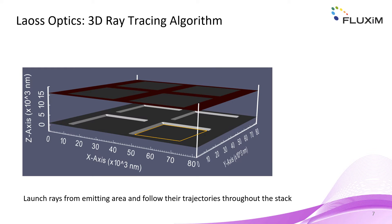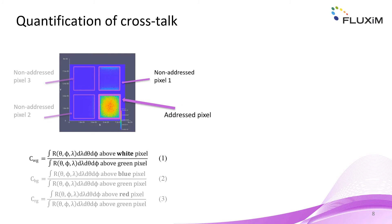With this we are ready to start our simulation. Rays are launched from the addressed green pixel, highlighted in yellow, and we follow the trajectories of rays throughout the stack. In the end, LAW-3 analyzes which rays exit the color filter plane, through which xy position, and with which angle phi and theta with respect to the surface normal. We analyze the light intensity that exits the color filter plane to the top in any angular direction, shown in the xy intensity map. We then integrate all the light that exits the non-addressed pixels and divide it by the light that exits the addressed pixel.